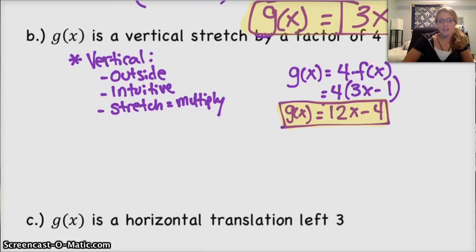Next problem. g of x is a horizontal translation left 3. Remember, shifts, up, down, left, right, that's always adding and subtracting. We're not going to be multiplying by anything to get that to happen. So, things to take note of, it's horizontal, which means it's got to be inside the parentheses. Anything inside the parentheses, anything that's horizontal, is counterintuitive. So it's opposite of what you would normally think. And since it's a translation, we need to add or subtract.